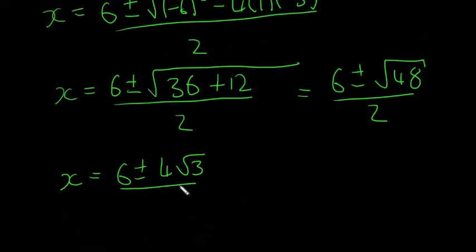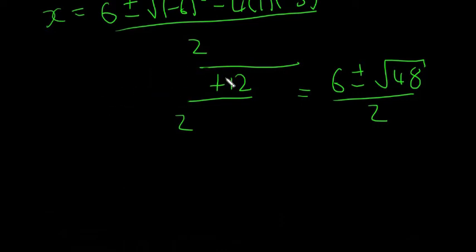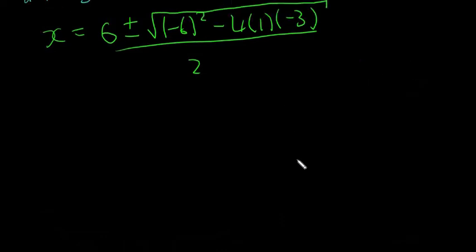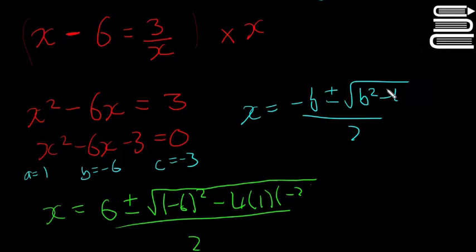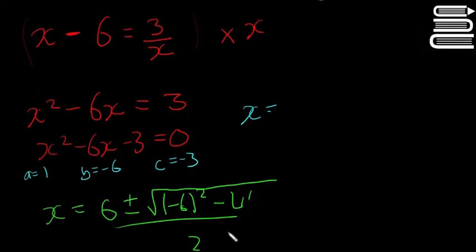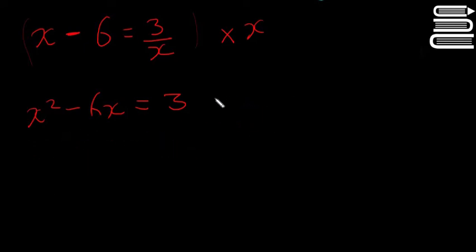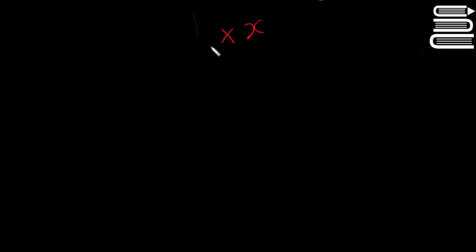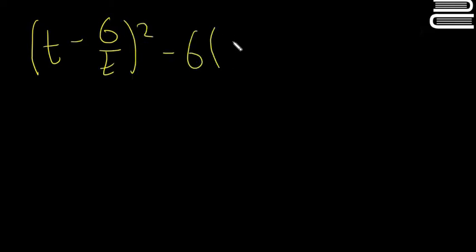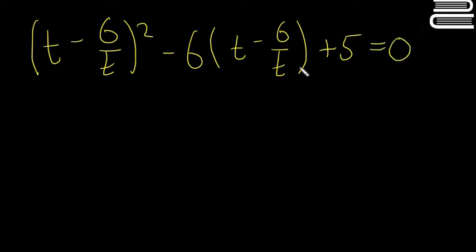The next one is going to be a slightly harder example. Again it's not going to look like a quadratic straight off — you'll have to change it a little first. The equation is: the quantity (t minus 6 over t) all squared, minus 6 times (t minus 6 over t), plus 5 equals 0. This may not look immediately like a quadratic equation, but it is.